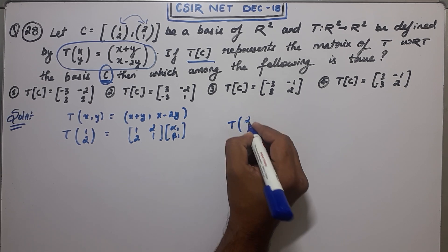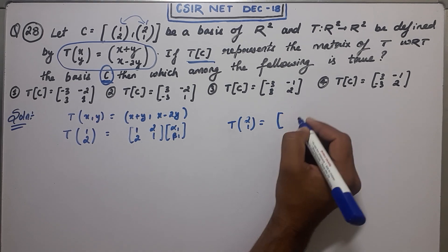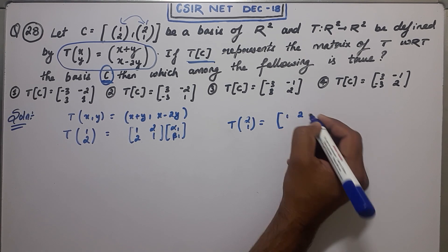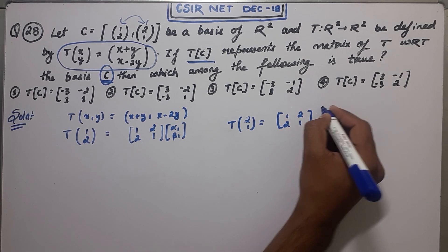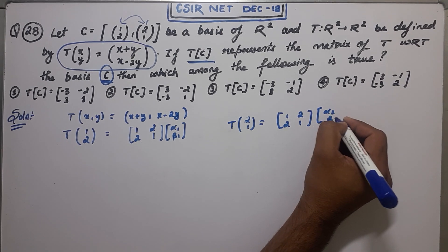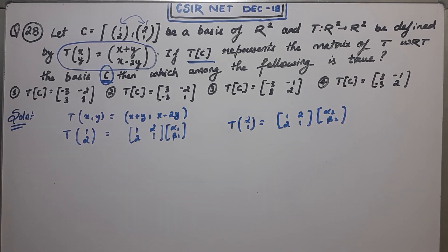2, 1, 2, 1, 1, 2, 2, 1, alpha 2, beta 2. So by solving this system, you will get your matrix. Just find the value of this.